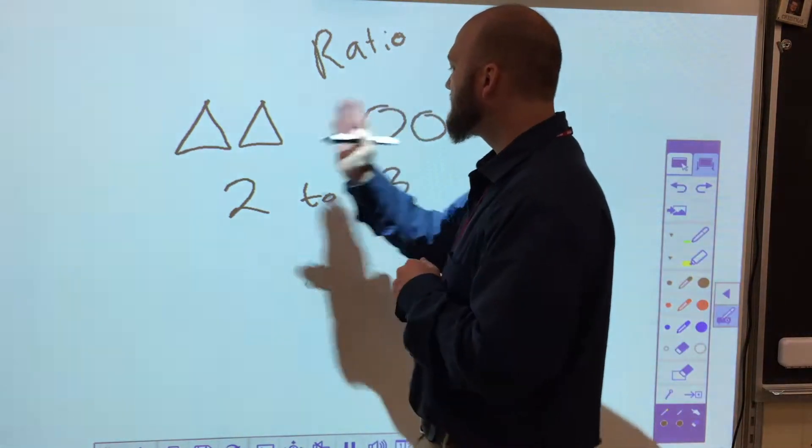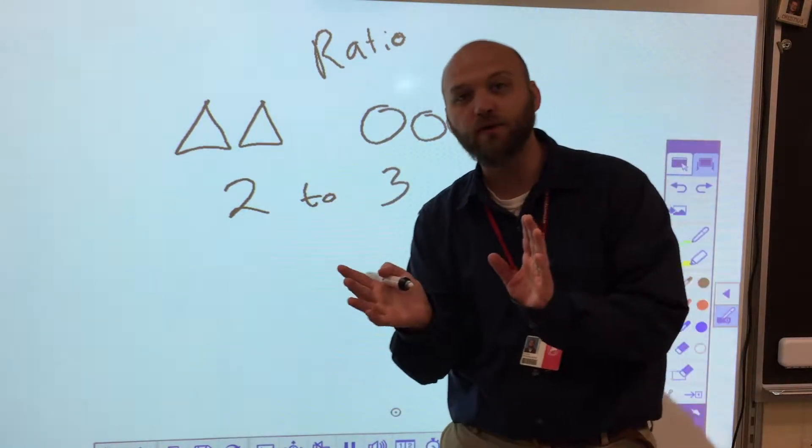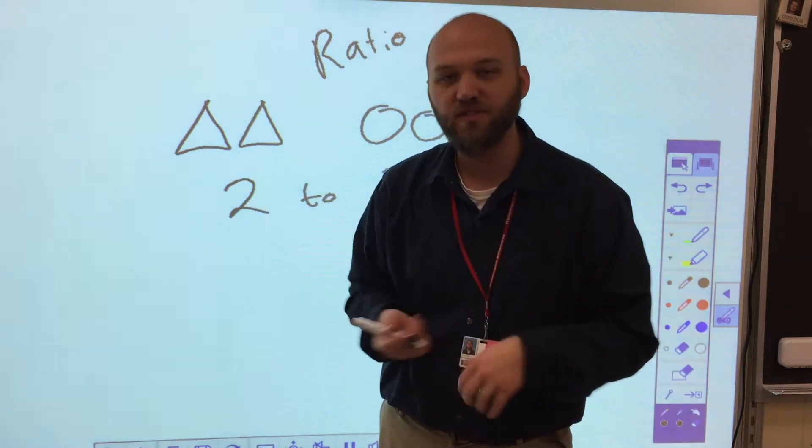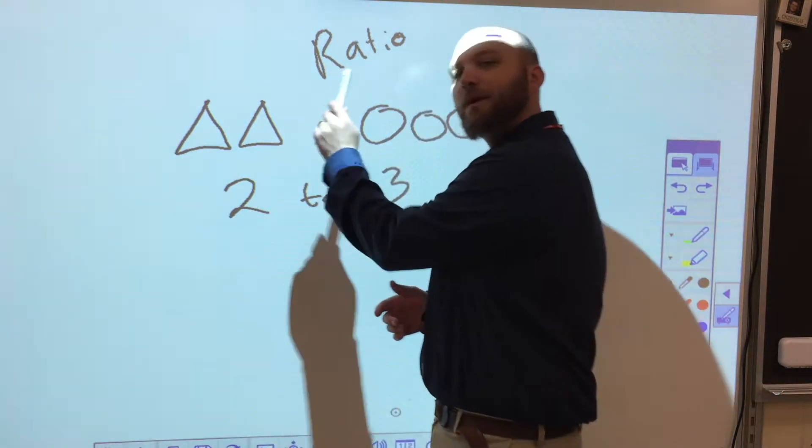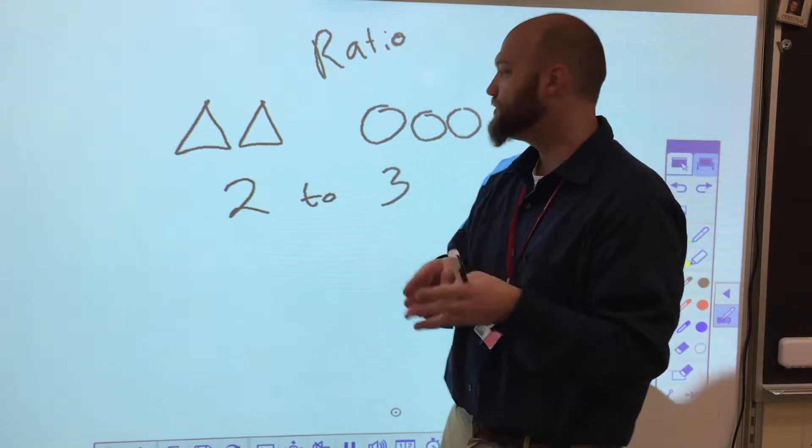So we're talking about comparing two different numbers, two of these to three of these. Now it's very important that you don't want to make them three to two. It's a three to two ratio because we're talking about triangles first. So it's triangles to circles, two to three ratio.